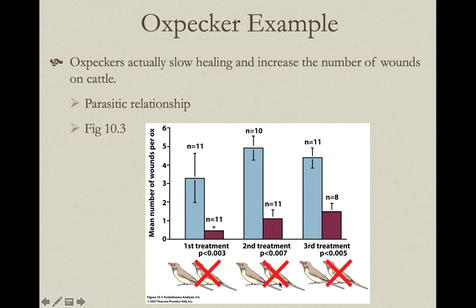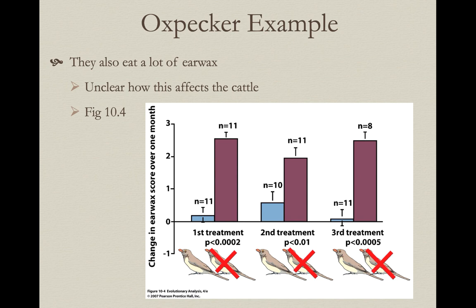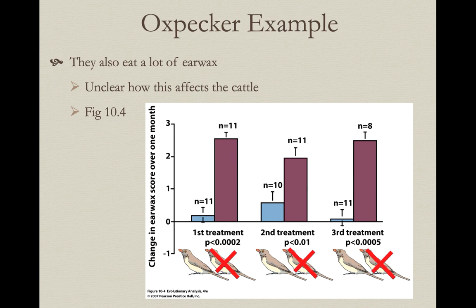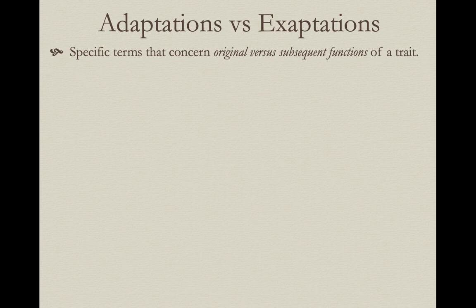Other researchers noticed the birds are actually feeding on wounds of the cattle and even creating them — their name is 'oxpeckers' after all. This is more really a parasitic relationship, not mutualistic, and the data support this. When oxpeckers were excluded, cattle had fewer wounds over the same period. So they're actually causing wounds and feeding on the cattle's tissue. Additionally, cattle in the no-oxpecker treatment developed more earwax, suggesting another interaction between these species. That's a simple example of how you can test a hypothesis of adaptation.